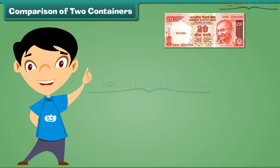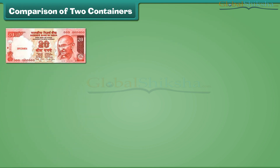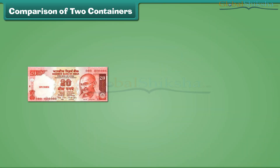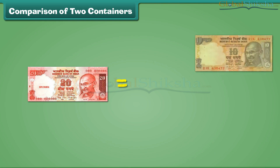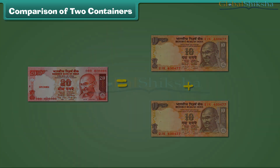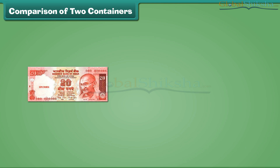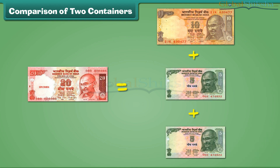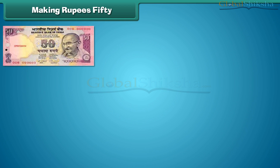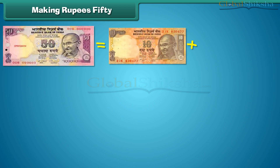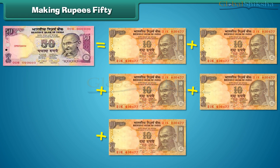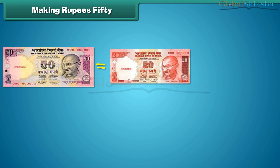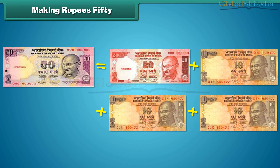A 20 rupee note is equal to the sum of 4 five-rupee notes. A 20 rupees note is equal to the sum of 2 ten-rupee notes. A 20 rupees note is also equal to the sum of 1 ten-rupee note and 2 five-rupee notes. Similarly, a 50 rupees note is equal to the sum of 5 ten-rupee notes. A 50 rupees note is equal to the sum of 1 twenty-rupee note and 3 ten-rupee notes.